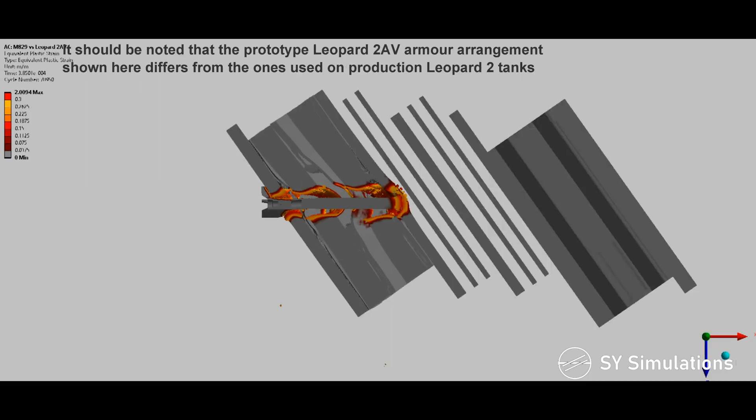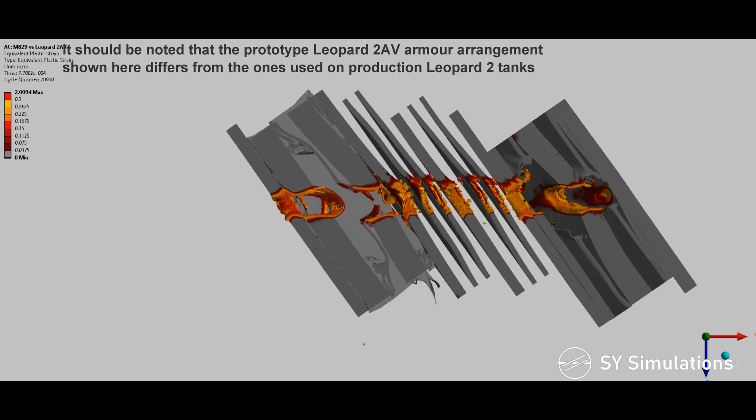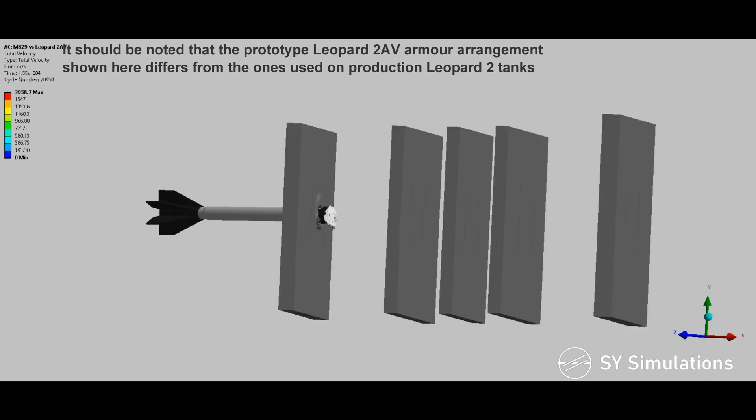It should be noted that the prototype Leopard 2AV armor arrangement shown here differs from the ones used on production Leopard 2 tanks.